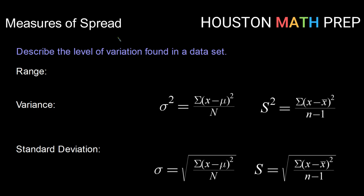We have three main measures of spread. The first one is very simple and we've already actually worked with it a bit, and that is the range. Our range can be calculated with our max value minus our min value. Since the range is only based on the maximum value and the minimum value, the range can be quite misleading — it's not a reliable measure.